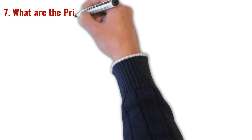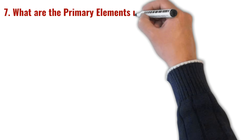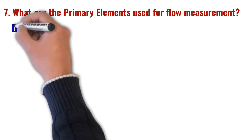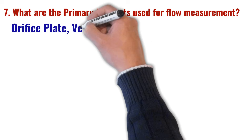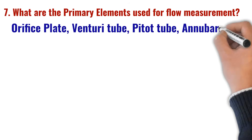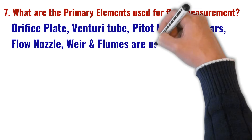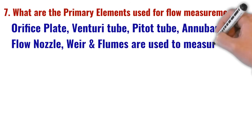Last but not least, the seventh most important instrumentation interview question is: what are the primary elements used for flow measurement? Primary elements such as orifice plate, venturi tube, pitot tube, annubars, flow nozzle, weirs, and flumes are used to measure flow.